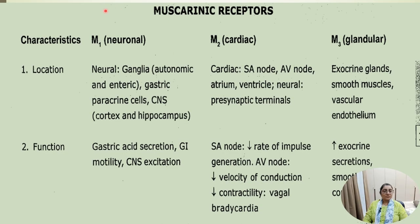There are various muscarinic receptors: M1, M2, and M3, each with distinct locations and functions. M1 receptors are located in neuronal ganglia, the autonomic system, enteric and gastric parietal cells, and the CNS. Functions of M1 include gastric acid secretion, GI motility, and CNS excitement.